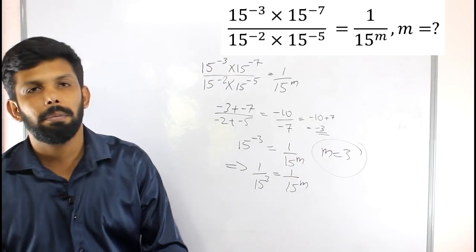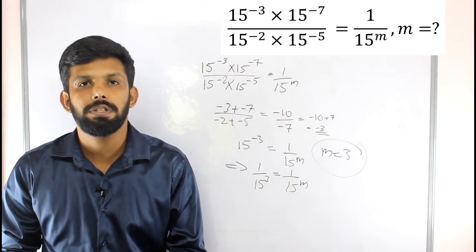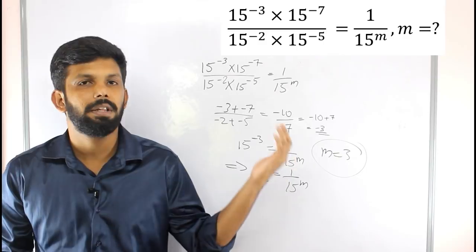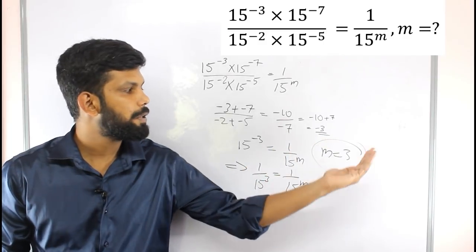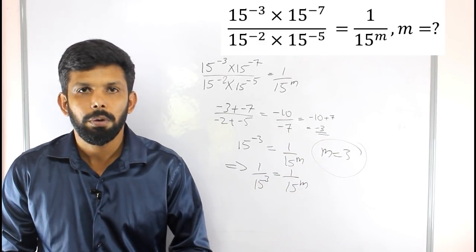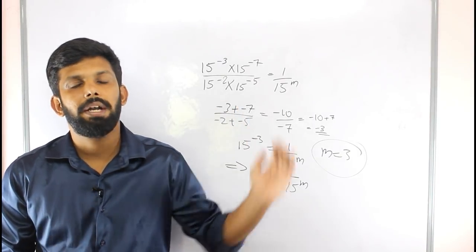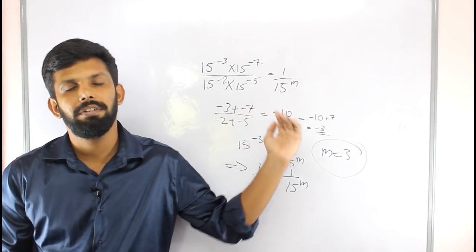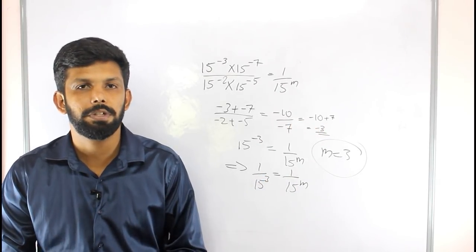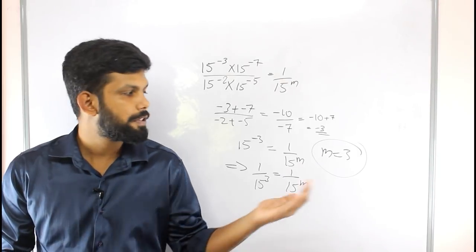The value of m is 3. If it's a symbol, the powers and base will be the same — we take the powers and do the calculations. This is how we apply the laws of exponents. We multiply by adding the powers for multiplication, and subtract the powers for division.